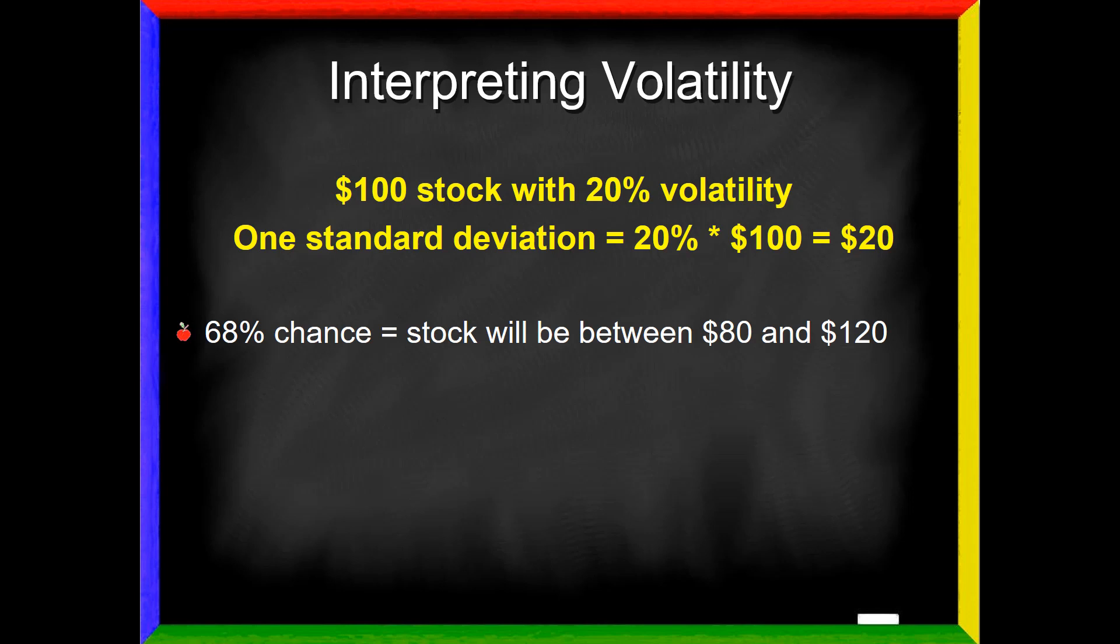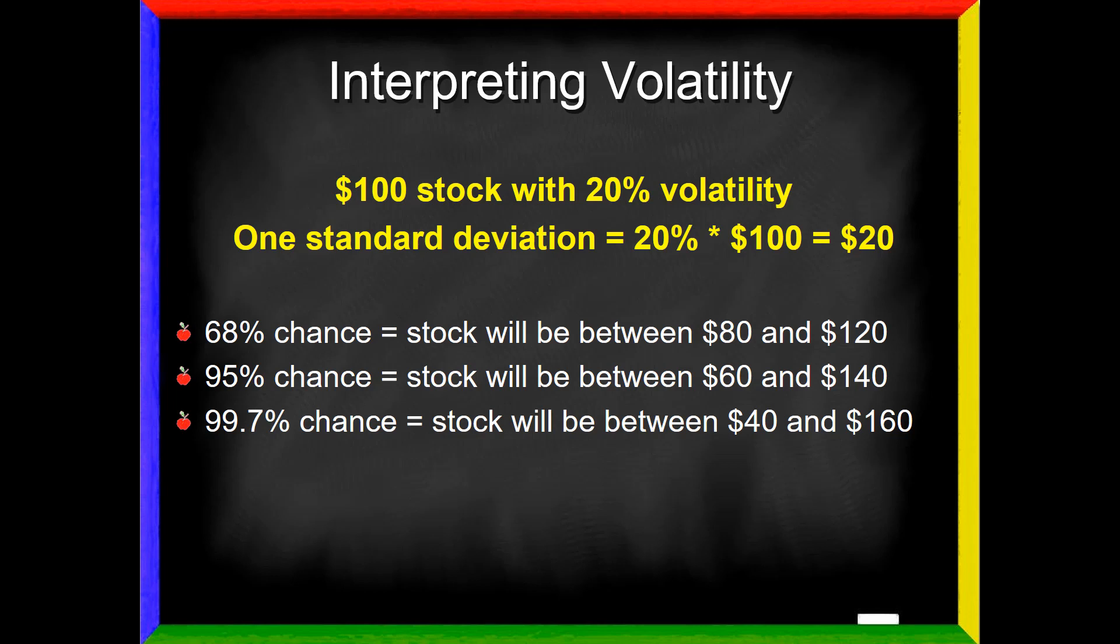So I could say that there is a 68% chance that this stock will be somewhere between $80 and $120 in one year. I could go two standard deviations, which means add another 20 and subtract another 20 from each of those numbers, and I would be 95% confident. Or I would say there's a 95% chance that the stock will be somewhere between $60 and $140 in a year. If I want more confidence, I can go out to a third standard deviation. Let's add another 20 and subtract another 20. And therefore, I'm almost 100% confident that the stock will be somewhere between $40 and $160.